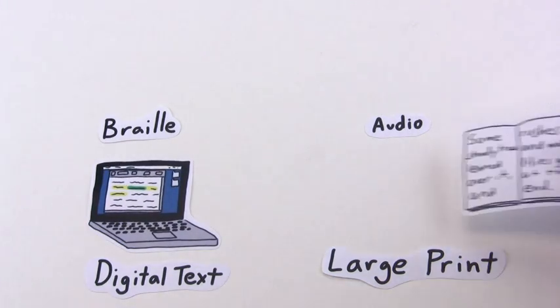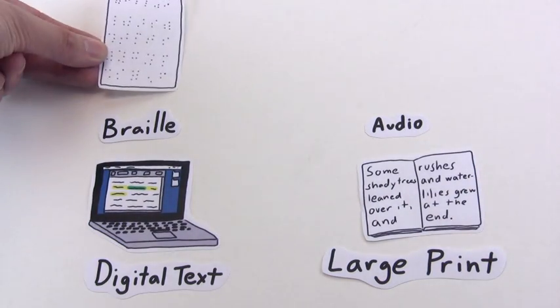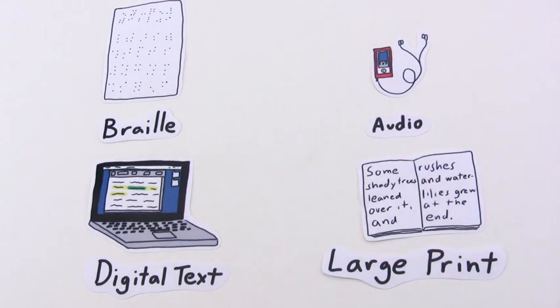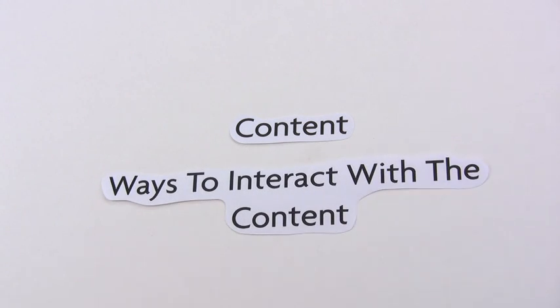To succeed in school, these students need learning materials presented in a way that works for them. We're going to talk about two parts of AIM: the content, and a way to interact with the content.